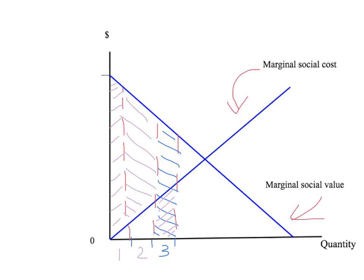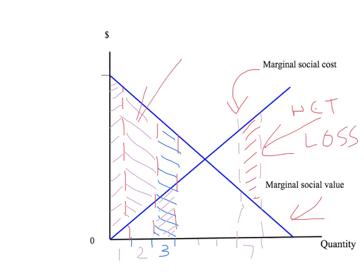We could keep going to whatever quantity we wanted. Notice that if we go past where marginal social value equals marginal social cost — out to the fourth, fifth, sixth, seventh unit — our marginal social cost is above our marginal social value. In that situation we're going to have a negative gain to society from producing and consuming the product. The gain from the area under the marginal social value curve is less than the marginal social cost, so this is a net loss if we produce out there.